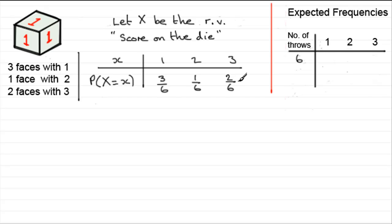According to our table of probabilities here, we've got a 3 out of 6 chance of scoring a 1. Three throws in every 6, we're saying, will result in a 1. So if we throw it 6 times, we could expect to get three 1s.